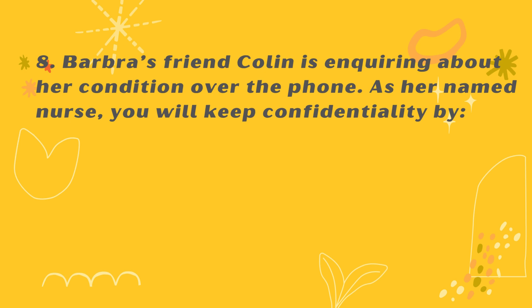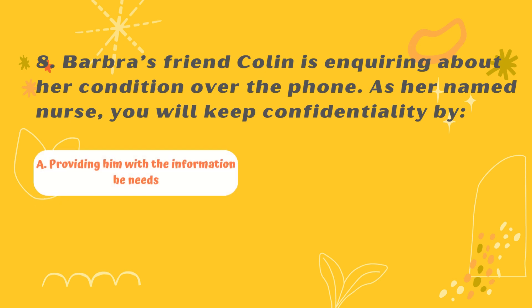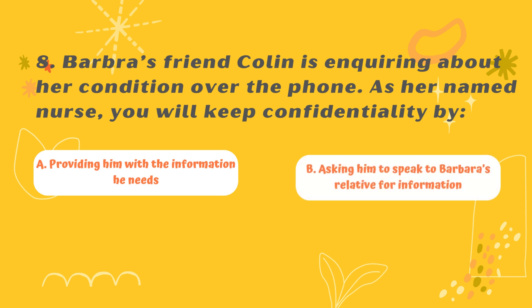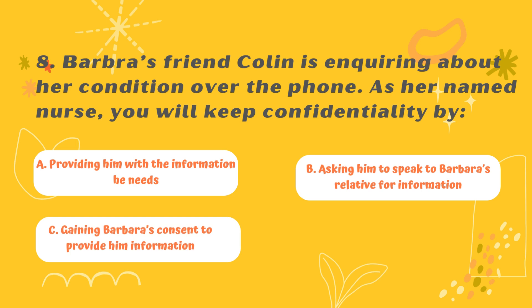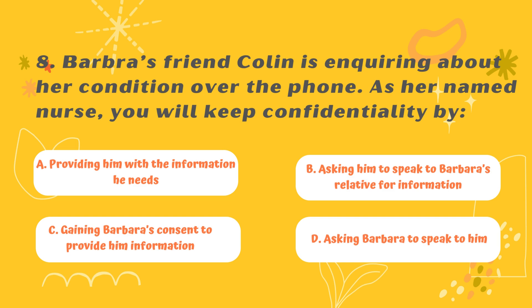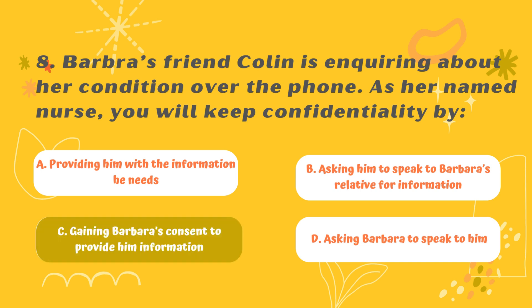Question 8: Barbara's friend Colin is inquiring about her condition over the phone. As her named nurse, you will keep confidentiality by — Option A: Providing him with the information he needs. Option B: Asking him to speak to Barbara's relative for information. Option C: Gaining Barbara's consent to provide him information. Option D: Asking Barbara to speak to him. The correct answer is C.